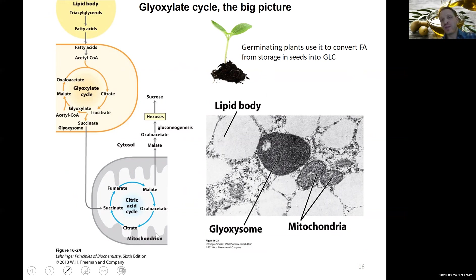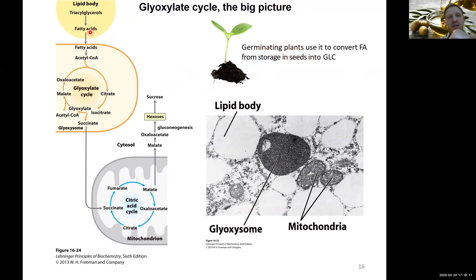Glucose is really important in germinating plants. We had talked about seeds containing a lot of oil as an energy resource for plants to germinate before they reach the light, break through the soil, and can do photosynthesis. In order to generate the main carbohydrate that plants use to transport through their system as an energy resource — sucrose — sucrose needs one molecule of glucose, so we need to make glucose. Plants are really dependent on this cycle.